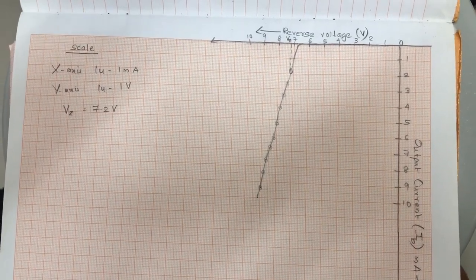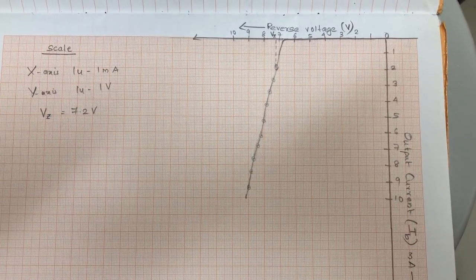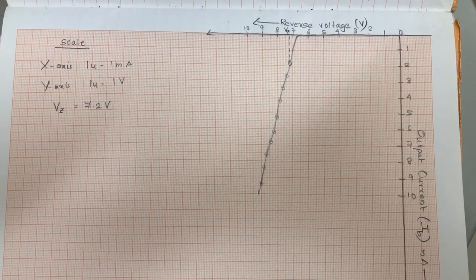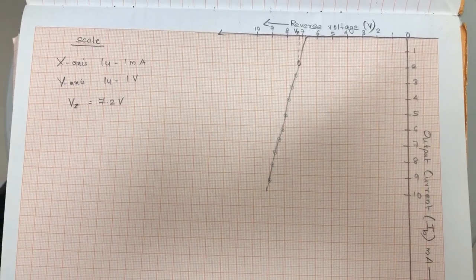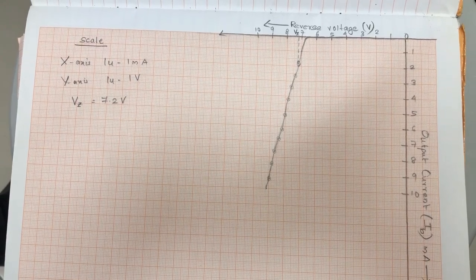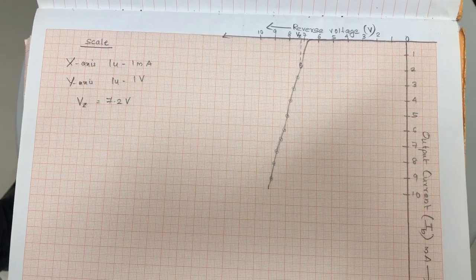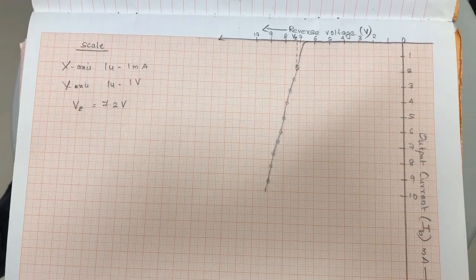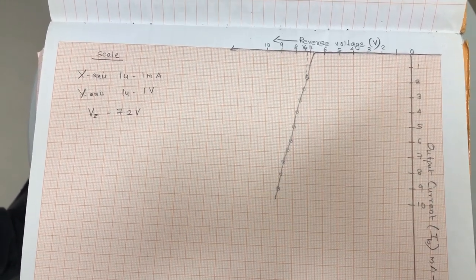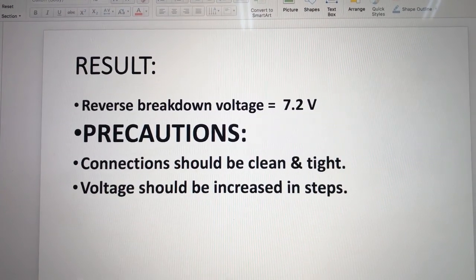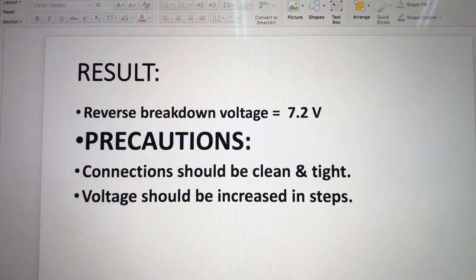After taking down the observations, we plot voltage versus current — reverse voltage on the x-axis and output current in milliampere on the y-axis, plotted in the third quadrant. The scale taken is 1 unit equals 1 milliampere on the y-axis and 1 unit equals 1 volt on the x-axis. The breakdown zener voltage is 7.2 volts. Result: the reverse breakdown voltage is 7.2 volts. Precautions: connections should be clean and tight, and voltage should be increased in steps.